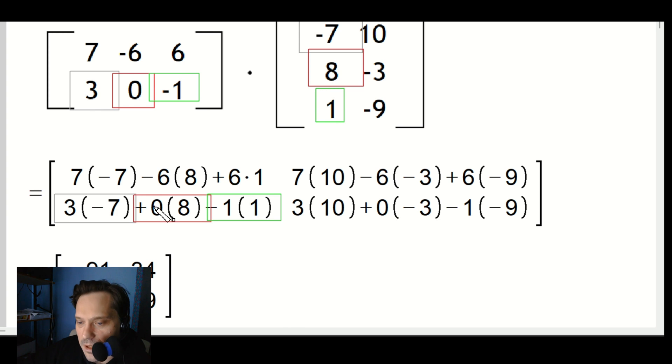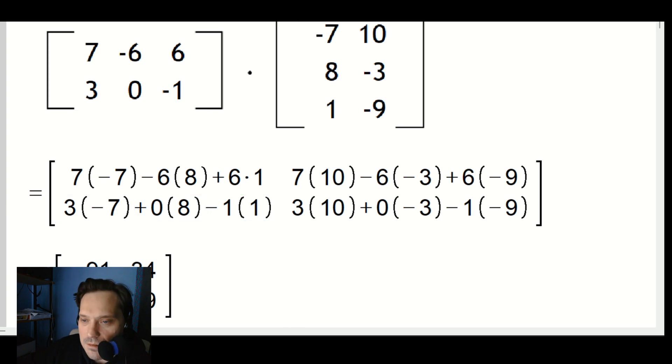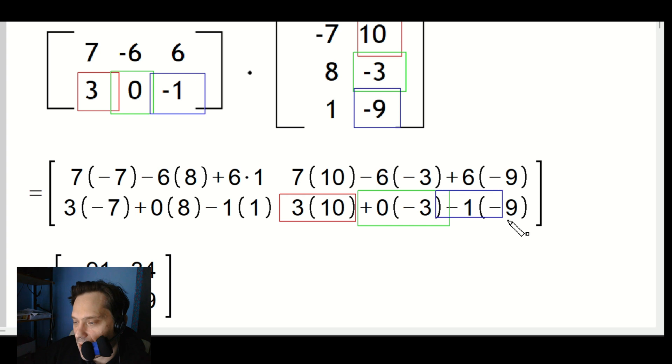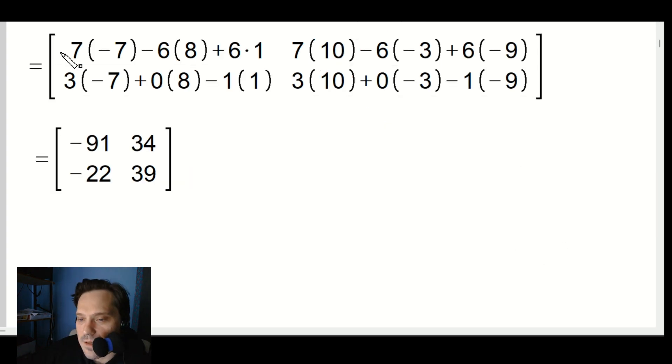In other words, this dotted with this gives you this. Let's do another one. Then you repeat: 3 times 10 in this position, then 0 times -3 in this position, and then -1 times -9 comes here. It's the last dot product.